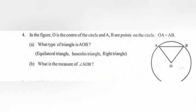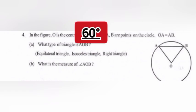4. In the figure, O is the center of the circle and A, B are points on the circle. OA equals AB. A. What type of triangle is AOB? Answer: Equilateral triangle. B. What is the measure of angle AOB? Answer: 60 degrees.